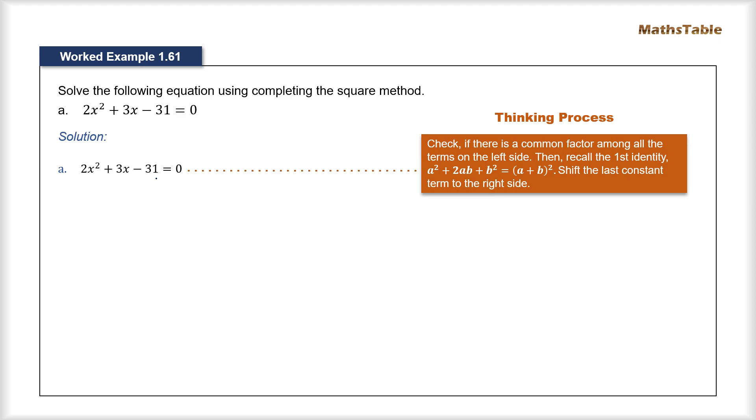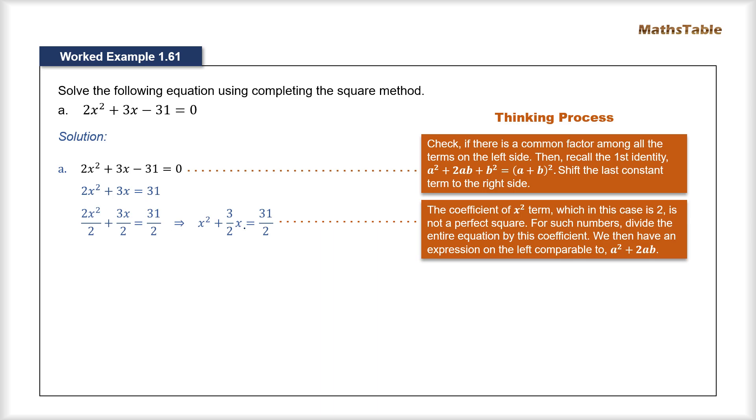So what we should do is in that case we should shift this last term onto the right hand side and focus on the first two terms. Now we can also see that the first term contains a coefficient 2 which is also not a perfect square. So in such case we can simplify this equation further by dividing the entire equation by the same coefficient 2 so that the first term now becomes simply x².